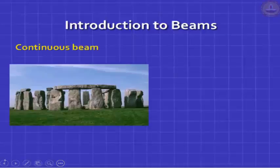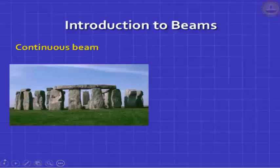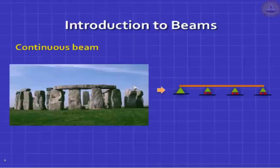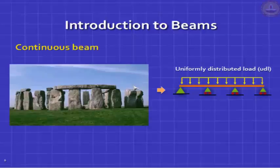Next type of beam is the continuous beam. So far we have seen: simply supported beam, cantilever beam, and simply supported beam with an overhang. The next category is the continuous beam — like a stone lintel with a vertical pillar and a big block of stone, as seen in old temples. This beam is continuous over many vertical supports, and you can model it accordingly. To make it stable, one support should be hinged and the others can be rollers.